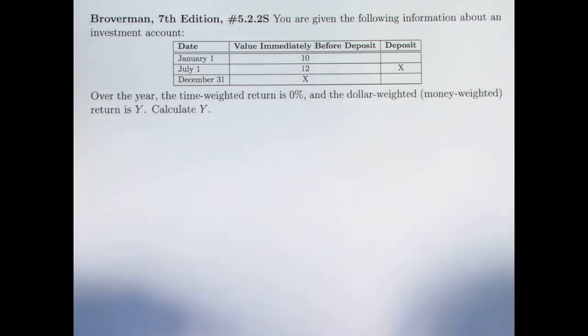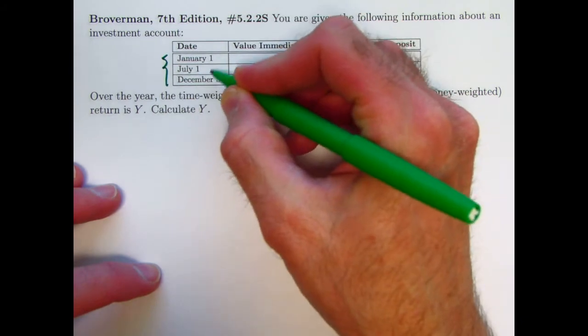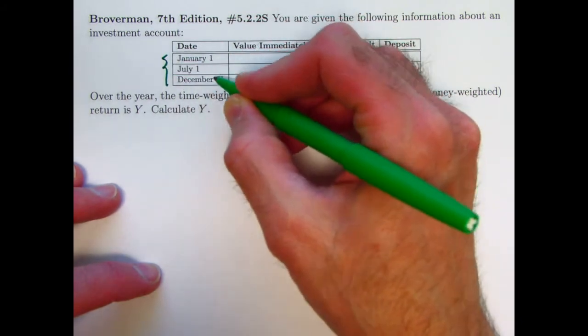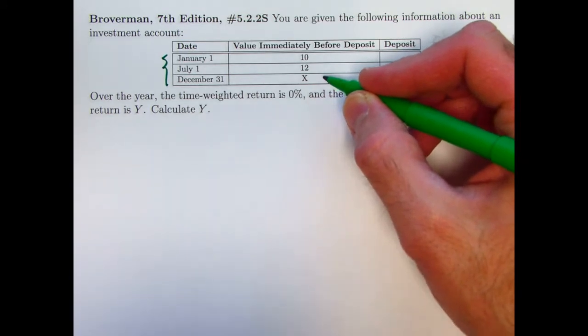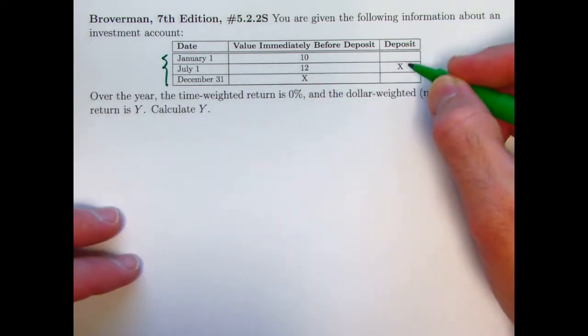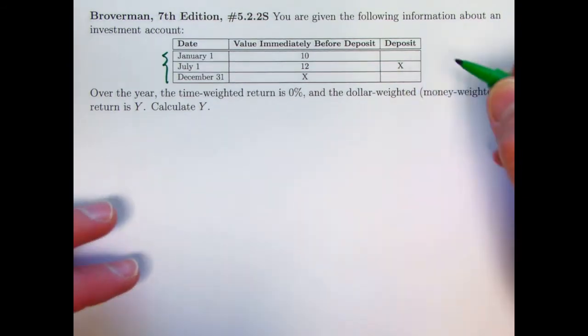You're given the following information about an investment account over the course of a single year. You can see here, January 1st, July 1st, December 31st of a single year, we've got the value in the fund immediately before any deposits. There's only one deposit at July 1st, halfway through the year, and that deposit value is x.